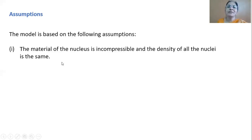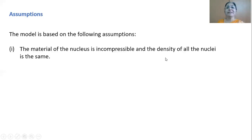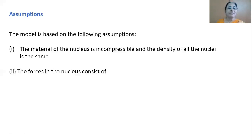The density of coconut oil considers all molecules together — density does not change from molecule to molecule. For coconut oil that is the density, for milk this is the density, for groundnut oil this is the density. So density for that particular liquid remains the same. Same way, the density of all nuclei is the same — a property we discussed in the previous class.